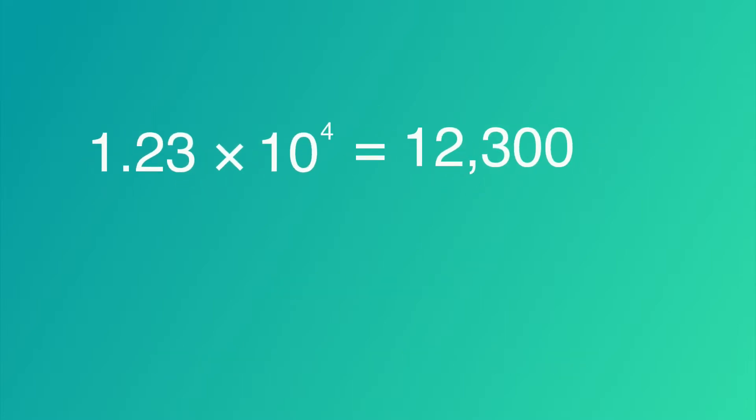For numbers written in scientific notation where the first number always has exactly one digit to the left of the decimal point, the long version of the number can be written out by moving the decimal point to the right by the same number of places as the value in the exponent. As you can see here, all you have to do is move the decimal point four times and you have your new number.